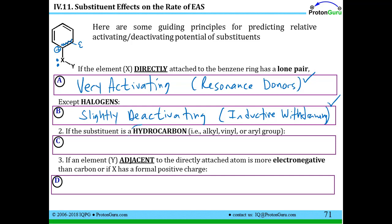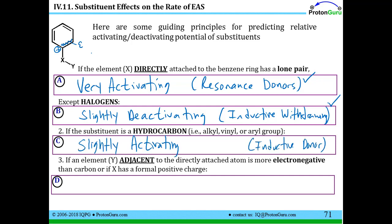What if the substituent is a hydrocarbon? It doesn't have a lone pair, and it's not very electronegative. If it's just an alkyl group compared to H, putting an extra R substituent onto that carbocation makes it a tertiary carbocation rather than secondary. A tertiary carbocation is more stable than a secondary one, so alkyl groups are inductive donor groups — they slightly activate the ring to electrophilic aromatic substitution.